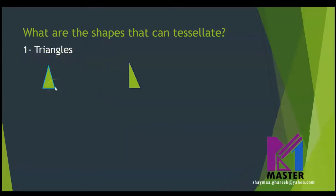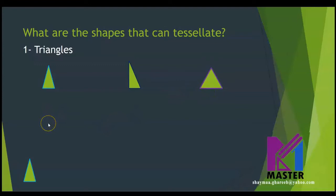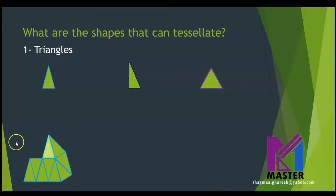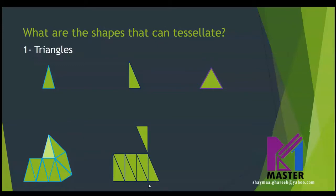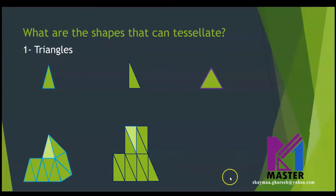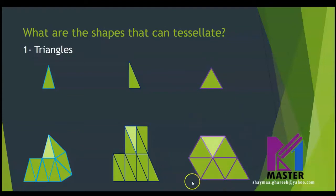Starting with triangles — here are three different types of triangles: an isosceles triangle, a scalene triangle, and an equilateral triangle. Let's check the first one together. As you can see, no gaps or overlaps. What about the second type, the scalene triangle? As you can see, the three types of triangles can tessellate.